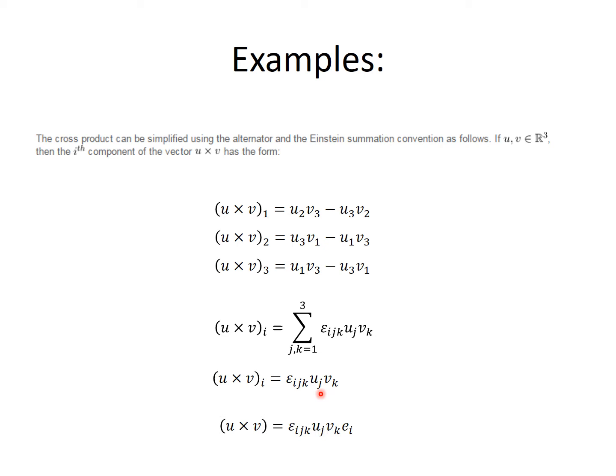We could also write the vector u×v by simply adding eᵢ to the term εᵢⱼₖuⱼvₖ, and summation here is implied over the 3 subscripts i, j and k because all of them are repeated.